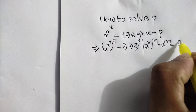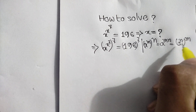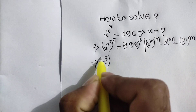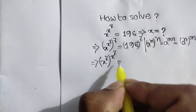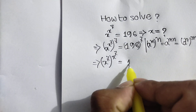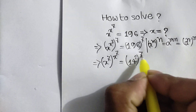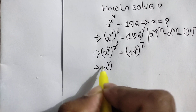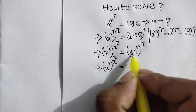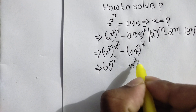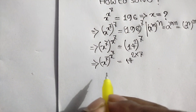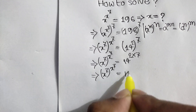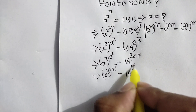Applying the rule a to the power m to the power n equals a to the power mn, we can write x to the power 7, whole power x to the power 7, is equal to — here we can write 14 squared, whole squared, to the power 7, or 14 times 7 — so x to the power 7, whole power x to the power 7, is equal to 14 power 14.